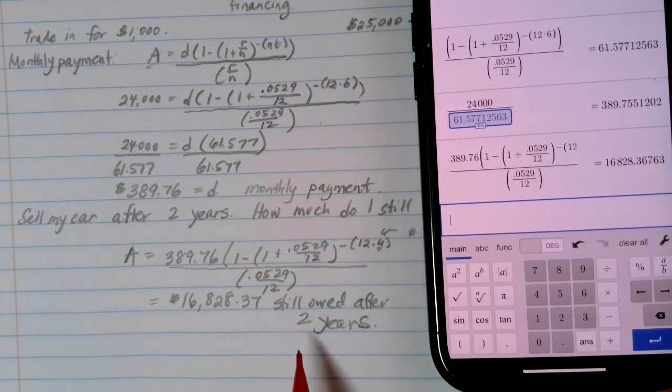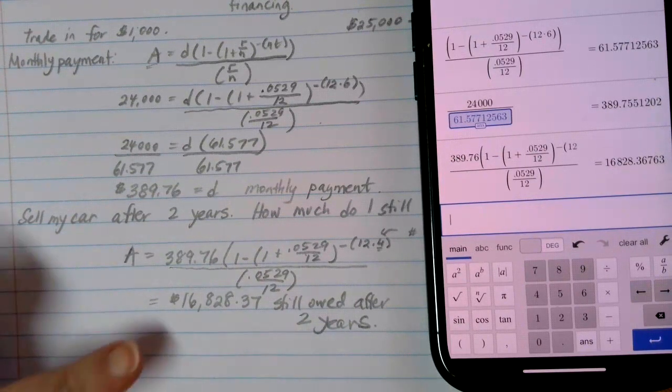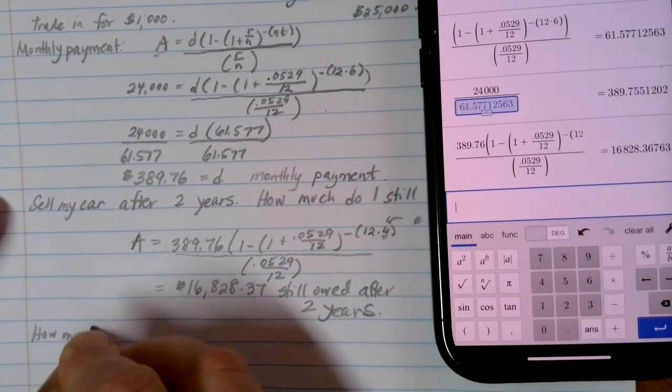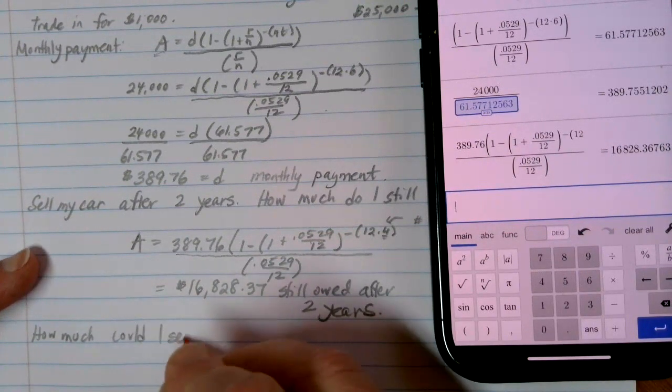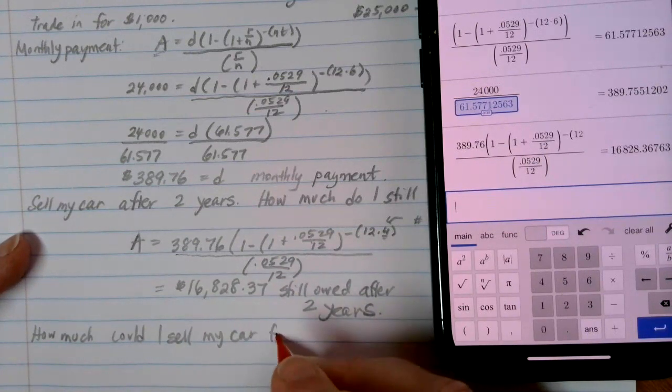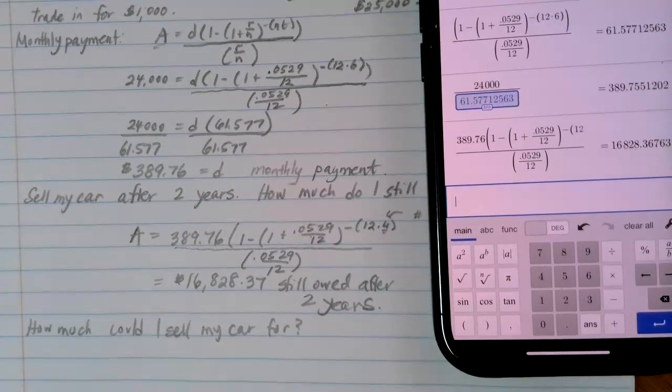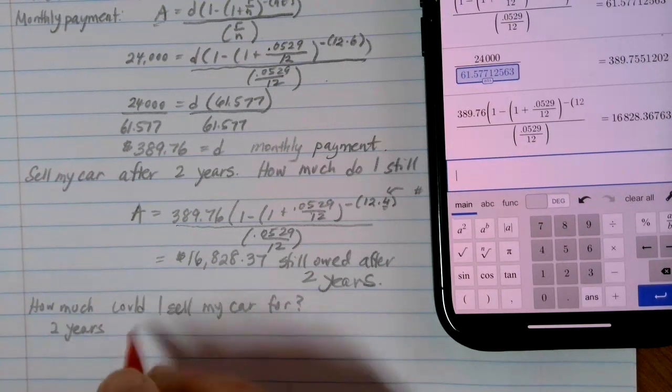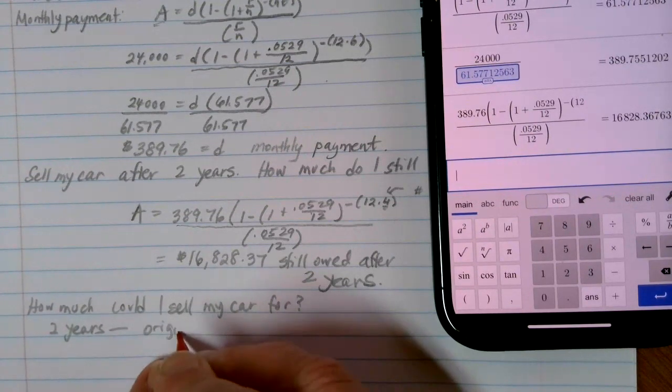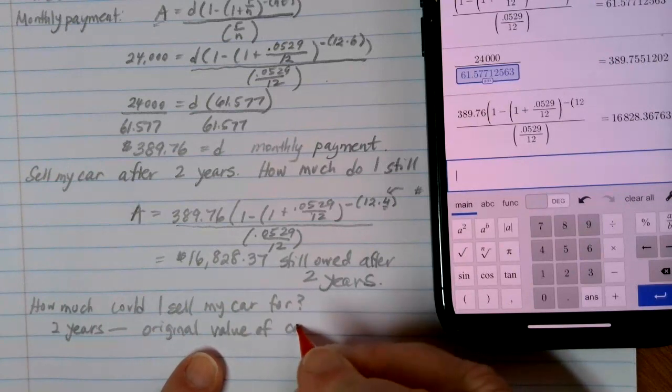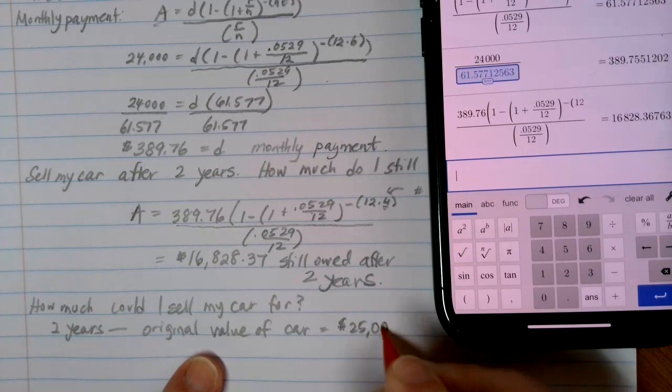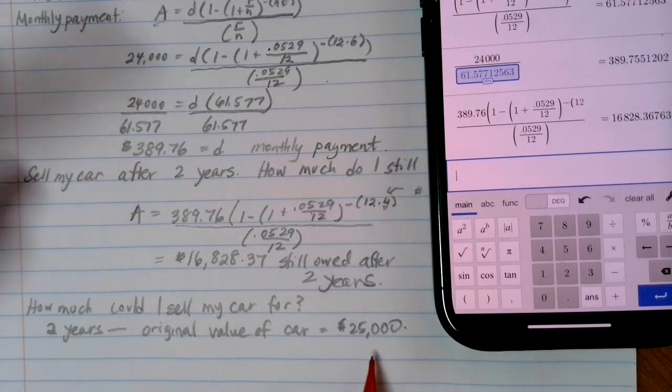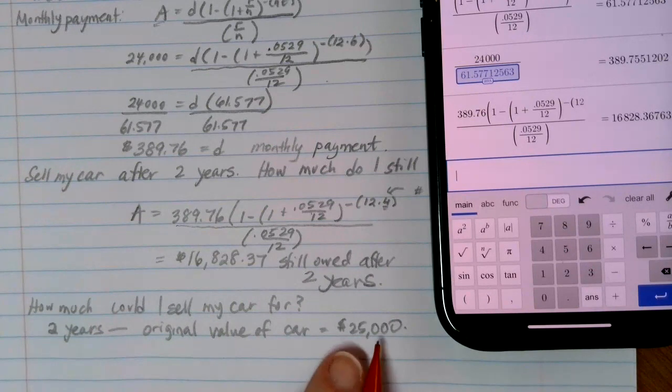So here we have kind of one of those early payoff problems. If we're going to sell the car after two years, this is how much I have to pay the bank. How much can I get for my car? I'm going to sell the car and then try to pay the bank off with the money that I get from selling the car. I've owned the car for two years at this point. The original value of the car, what I paid for it, was $25,000. In this case, we're not using the loan amount because I'm actually looking just for the value of the car itself.